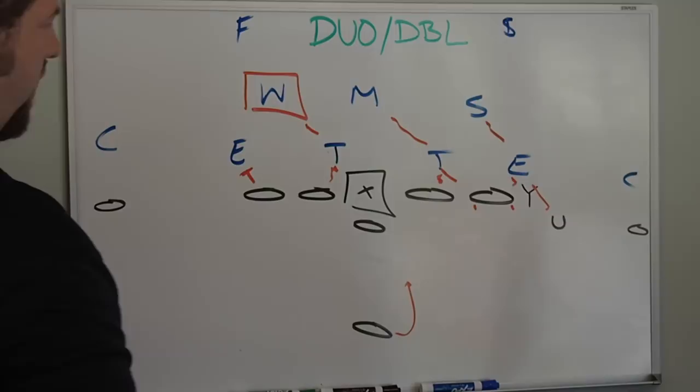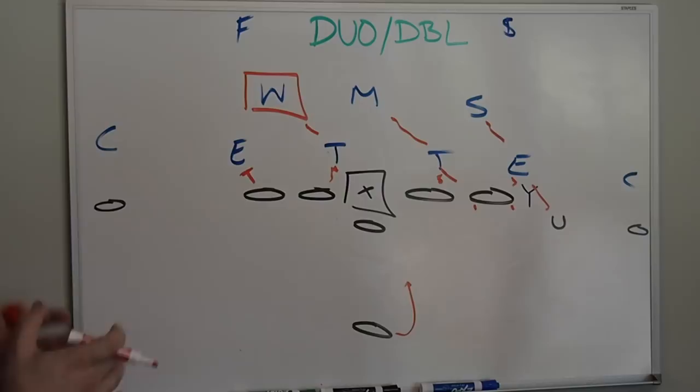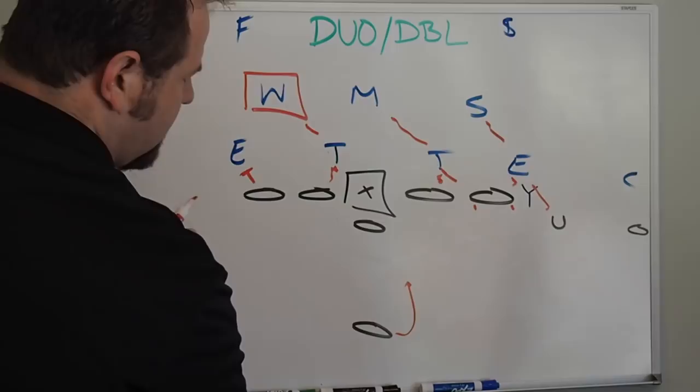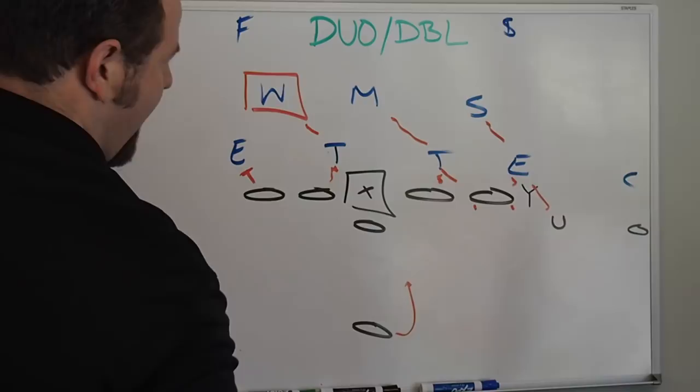Also very important, on a zone running play most of the time, not every time, there are balance schemes where this is not true. But most of the time on zone running play, the running back is looking at the defensive lineman first, specifically the front side lineman to make his read.